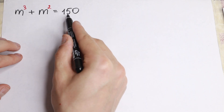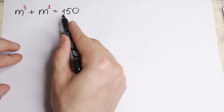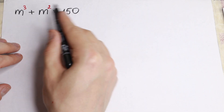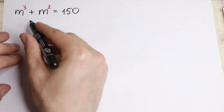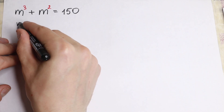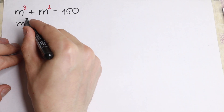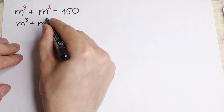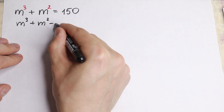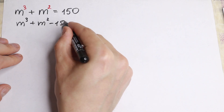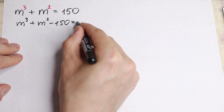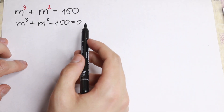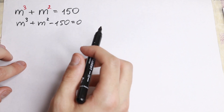Right here I need to bring this 150 to the left hand side. So we will have m³ plus m² minus 150 equal to zero. I just brought this constant to the left hand side.